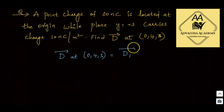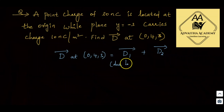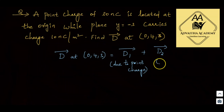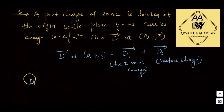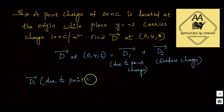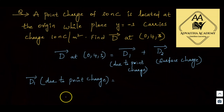The total flux density D̄ at (0, 4, 3) will be equal to D̄₁ plus D̄₂. D̄₁ is due to the point charge, and D̄₂ is due to the surface charge density. So let us first calculate D̄₁.